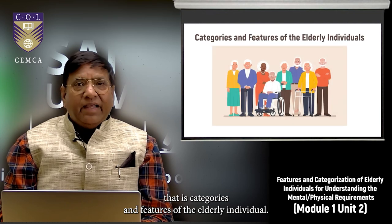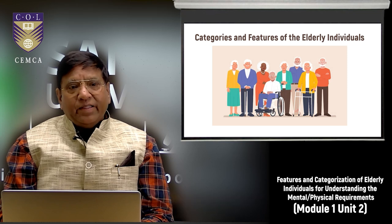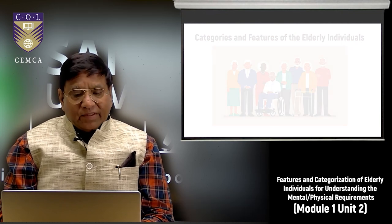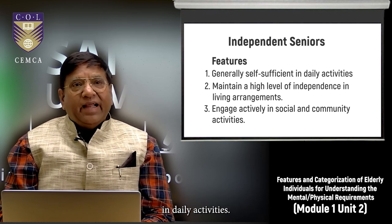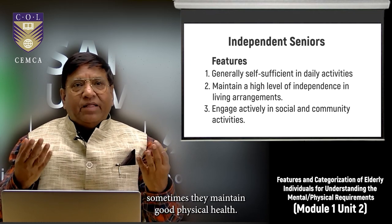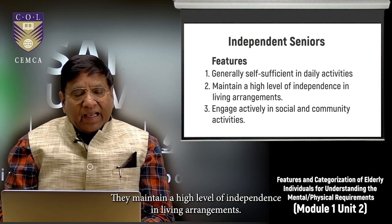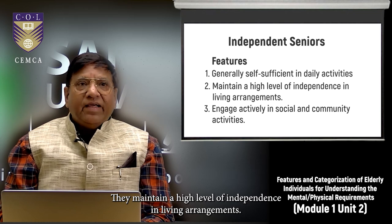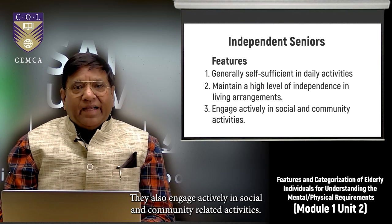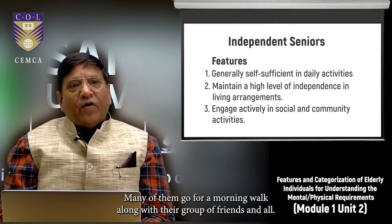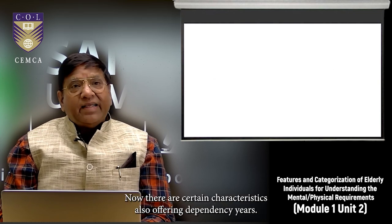Now we move to categories and features of the elderly individual. There are five categories. The first is independent seniors — they are generally self-sufficient in daily activities, maintain good physical and mental health, maintain a high level of independence in living arrangements, and engage actively in social and community activities.